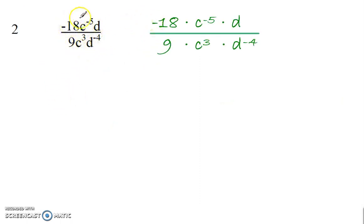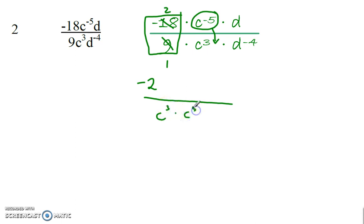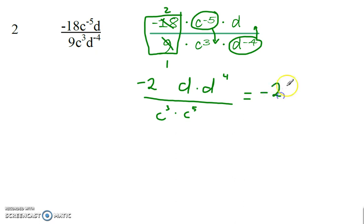On these, I want you to remember the numbers in front — the coefficients — treat them as their own fraction. Simplify that. 9 goes into both 18 and 9: 18 divided by 9 gives me 2 and 1, so I'm going to have negative 2 here. A negative exponent means division, so we put it on the other side of the fraction. That gives me c to the third times c to the fifth. Then this moves up, giving me d times d to the fourth.